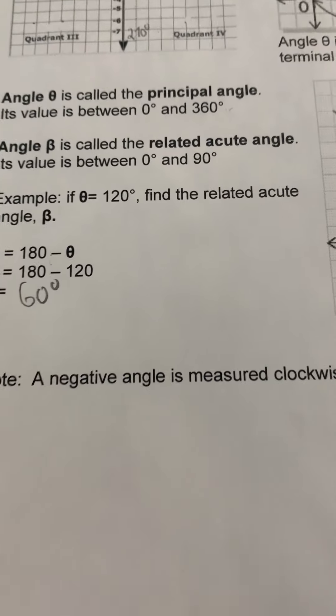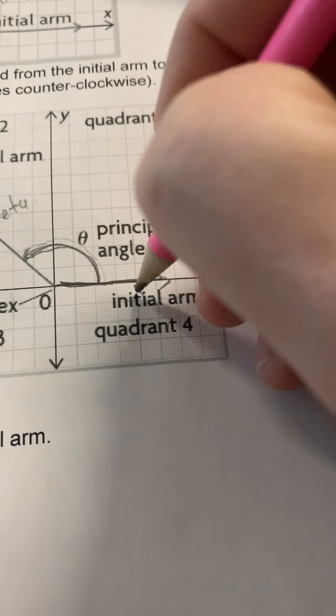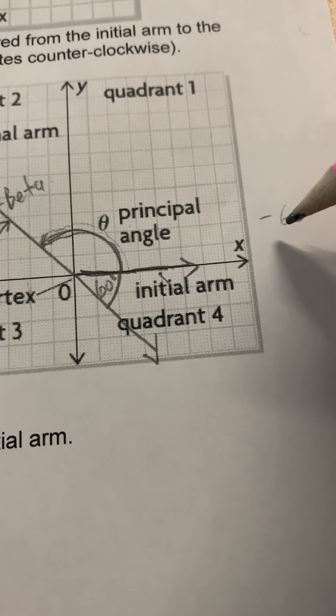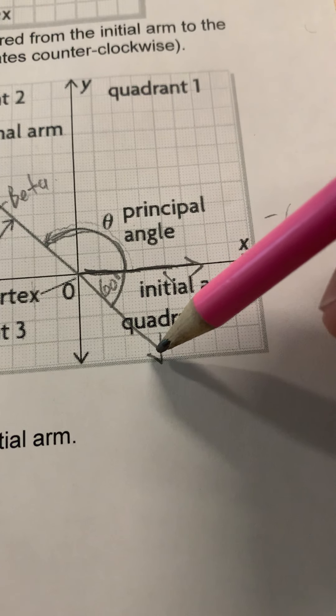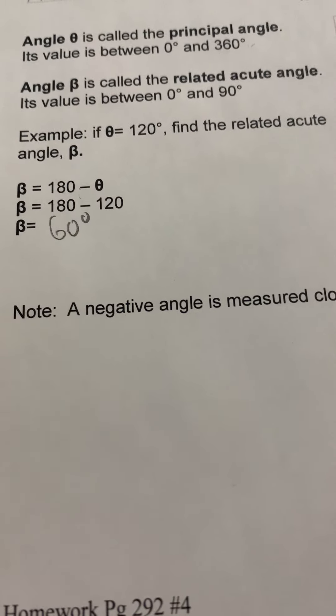Once we get out of quadrant 1, we end up creating two angles. An angle measured from the initial arm to the terminal arm is called theta, or the principal angle. But once we start moving into different quadrants, we end up creating two angles. So say we go counterclockwise to 135 degrees — this would end in quadrant two. This is still our principal angle, but now we create another angle between the terminal arm and the x-axis on the negative side. This we call beta, the related acute angle. So outside of quadrant 1 — in quadrant 2, 3, and 4 — we have two angles: the principal angle and the related acute angle, which is beta.